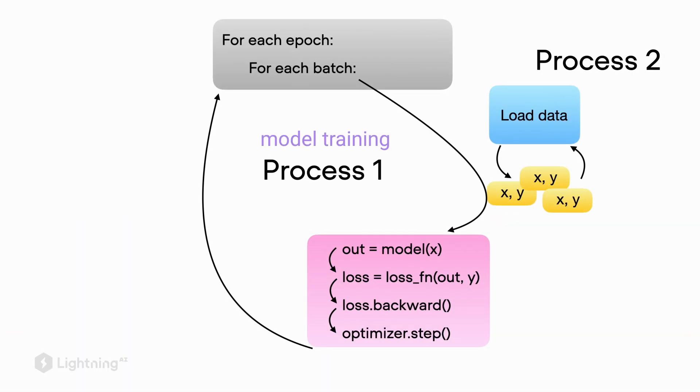So conceptually, this would look like as follows. We have process 1, which is the model training process, and while this model is training, the data loader is already in process to preparing the next mini-batch.